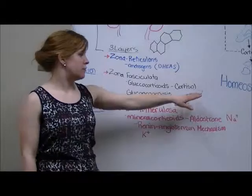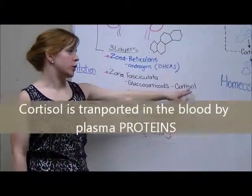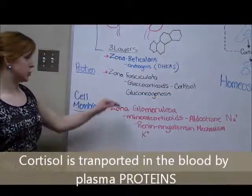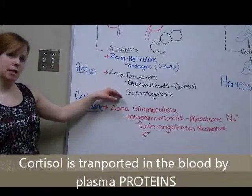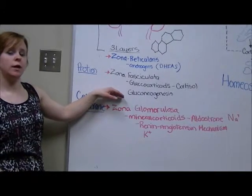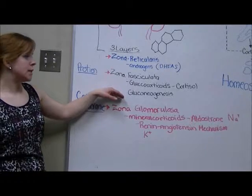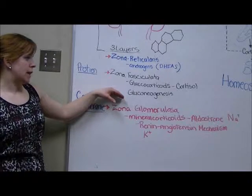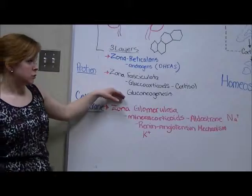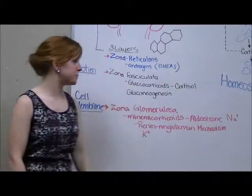An important glucocorticoid is cortisol, and it's responsible for gluconeogenesis. Recall that this is the breakdown of fat into fatty acids and proteins into amino acids, as well as the transport of glucose to target cells and also into the brain.